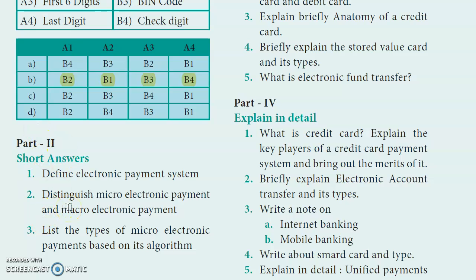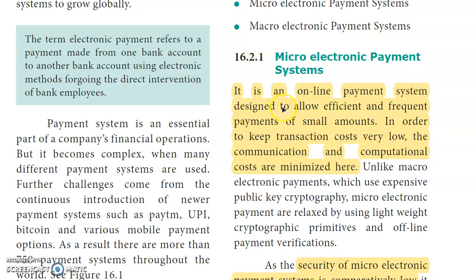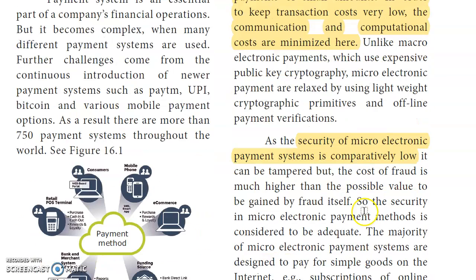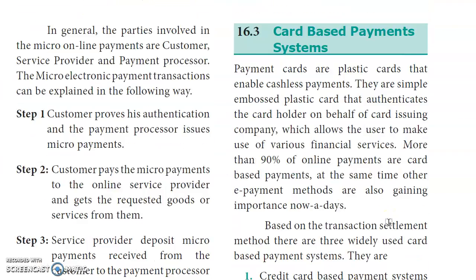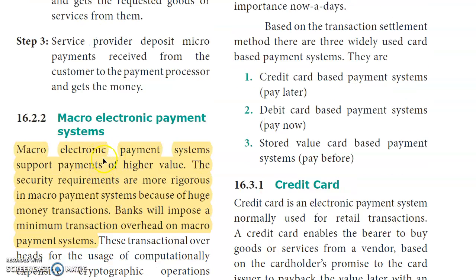Part 2, second question: Distinguish micro-electronic payment and macro-electronic payment. Section 16.2.1 covers micro-electronic payment. Micro-electronic payment is used for small amounts; the cost is very low, communication and computational cost is minimized, and security compared to macro-electronic payment is low. Macro-electronic payment supports payments of higher value, with higher security requirements and a minimum transaction overhead.